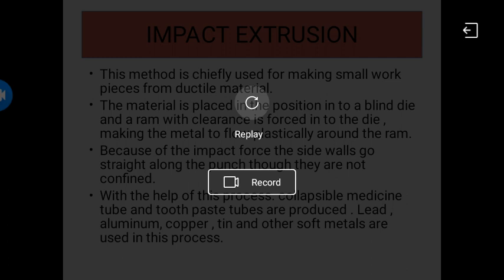In this class, we have discussed extrusion as a metal forming process where the metal takes a new shape by the principle of plastic deformation. Considering the nature of application of force, it is divided into direct extrusion, indirect extrusion, and impact extrusion. You should be able to differentiate these three types of extrusion along with their advantages, disadvantages, and applications.